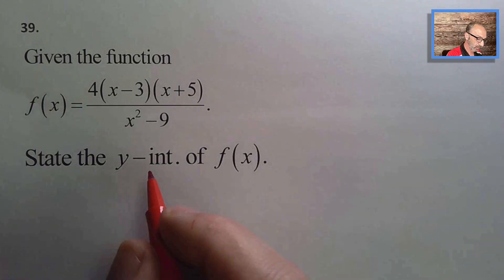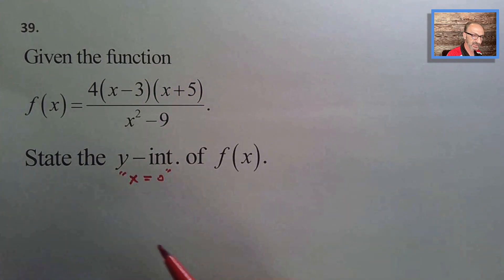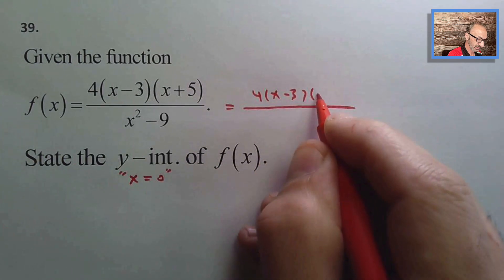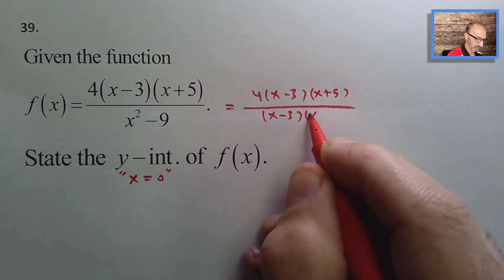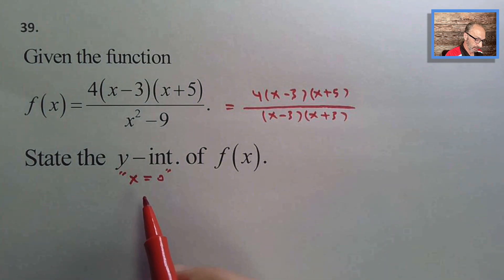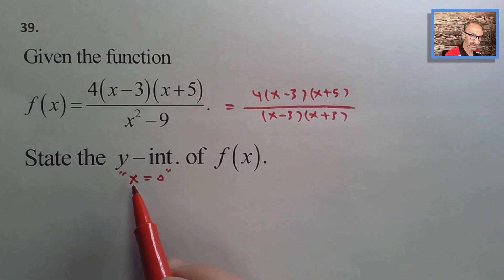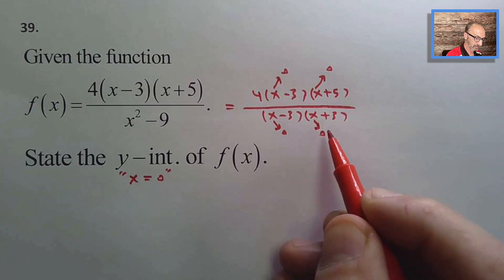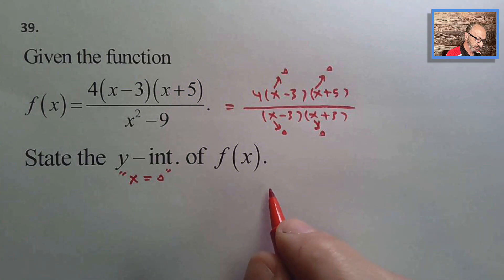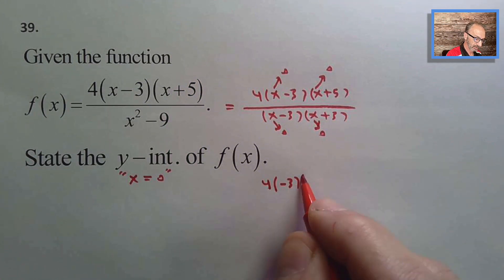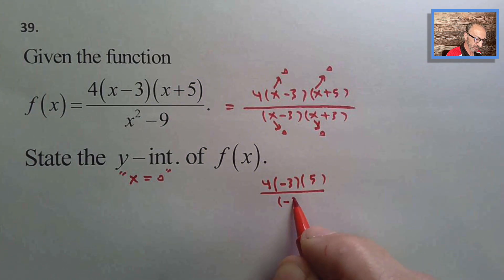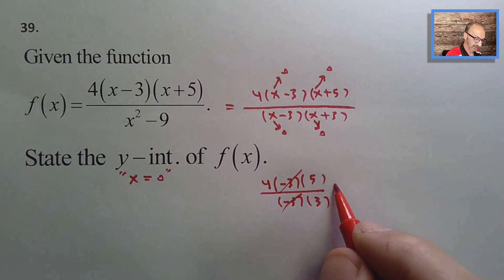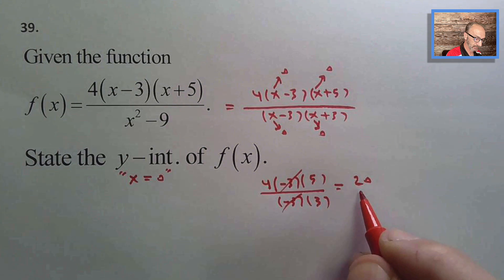Number thirty-nine: state the y-intercept by setting x = 0. Substituting into 4(x−3)(x+5) / [(x−3)(x+3)]: numerator = 4·(−3)·(5) = −60, denominator = (−3)·(3) = −9. After canceling the common factor, y = 4·5/3 = 20/3.